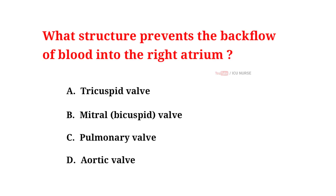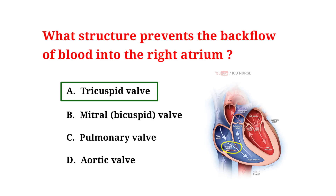What structure prevents the backflow of blood into the right atrium? A. Tricuspid valve. B. Mitral valve. C. Pulmonary valve. D. Aortic valve. And the correct answer is A: tricuspid valve. The tricuspid valve prevents the backflow of blood into the right atrium.